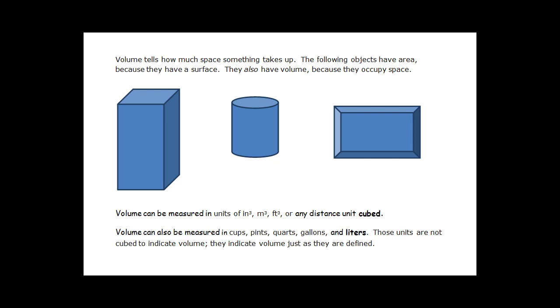Volume tells how much space something takes up. The following objects have area because they have a surface. They also have volume because they occupy space.